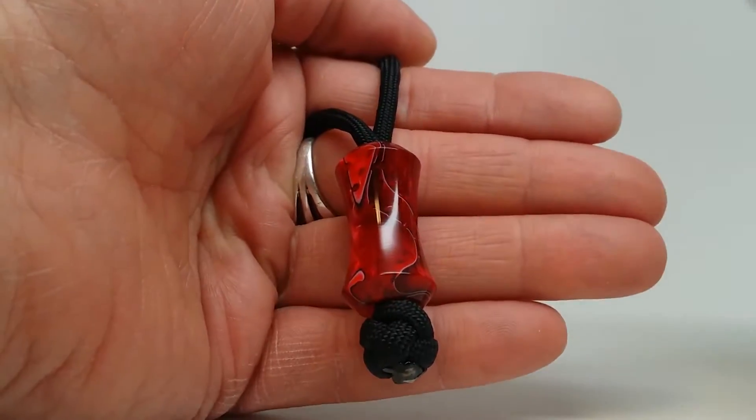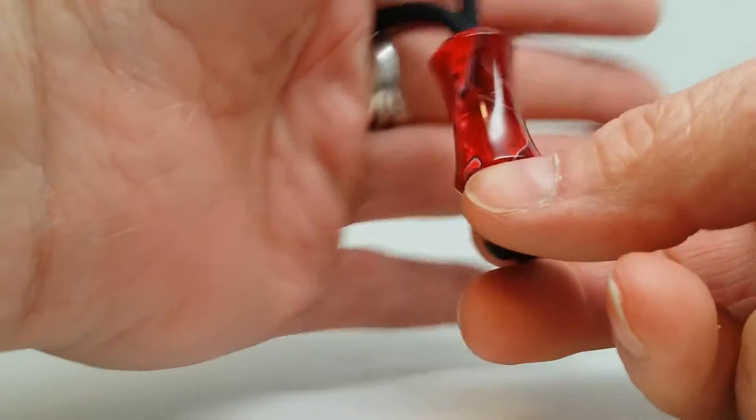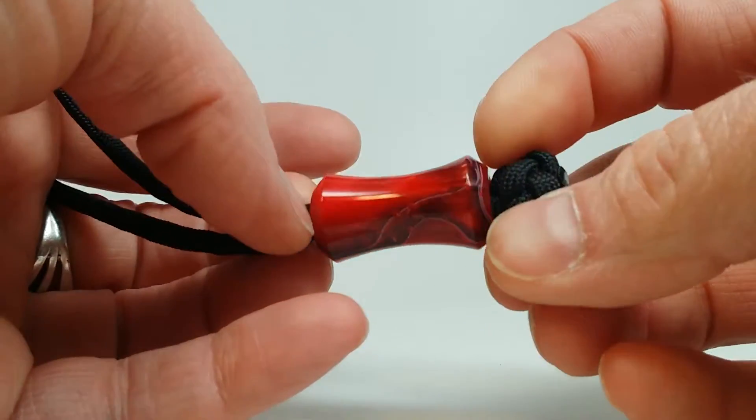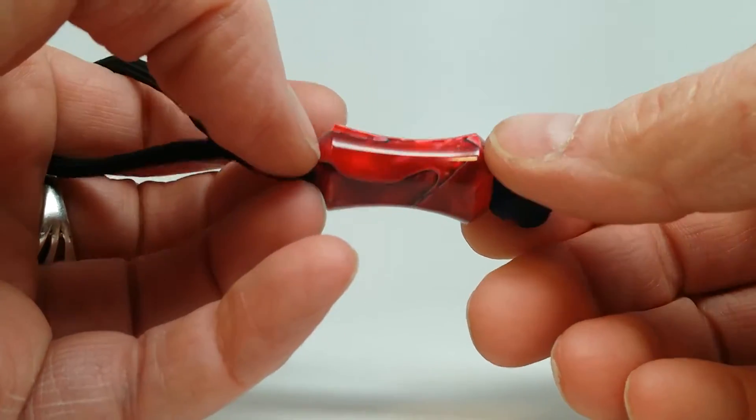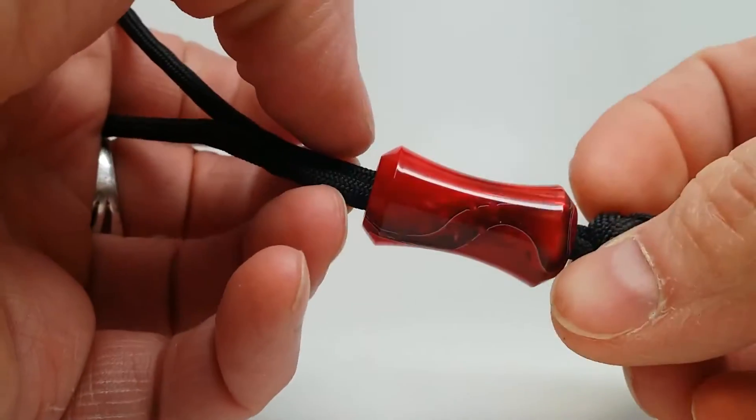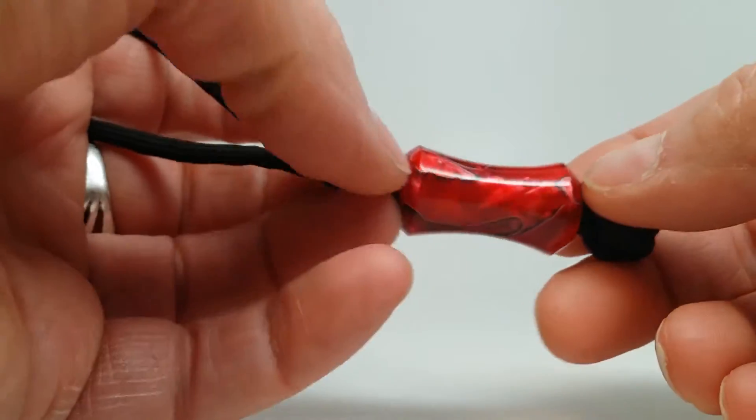All right, who likes red? This is a badass red. Check this out. This has got like a red pearl with a black and white mesh that runs through it. Lock this in. It's very long.